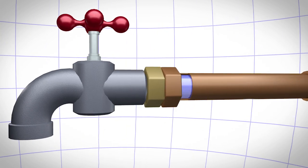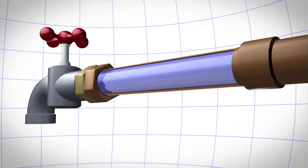Let's look inside the pipes to see what's going on. When a valve or faucet is opened, water begins to flow.